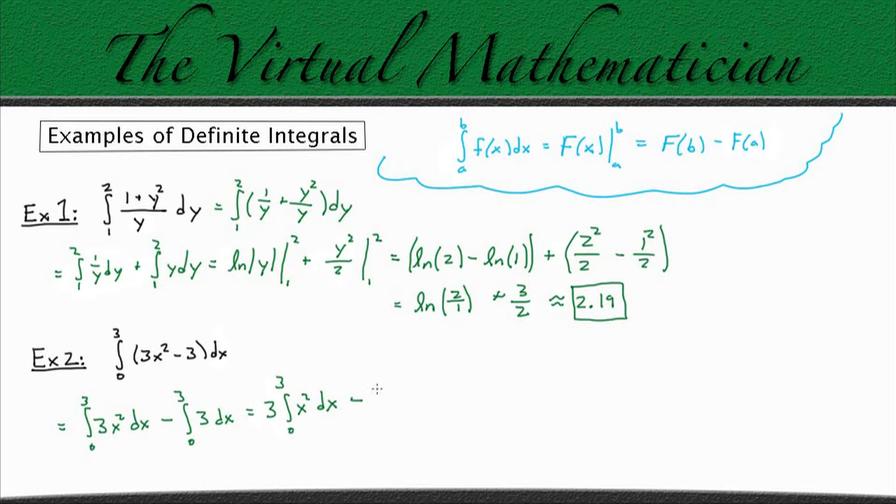Now you may be wondering why I didn't pull this 3 out as well because it's a constant too, right? Well, the reason I didn't do that is because it's simply a function of a constant, so that means the integral is very easy. All we have to do is a power rule on x to the 0 power and we get x to the 1, so this integral is just going to become 3x.